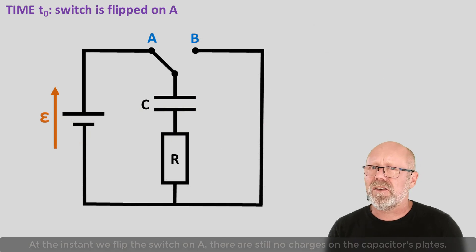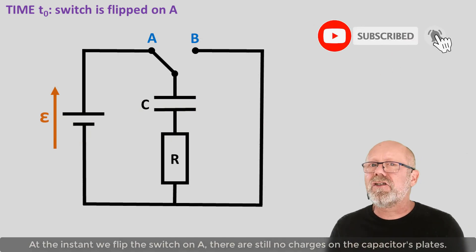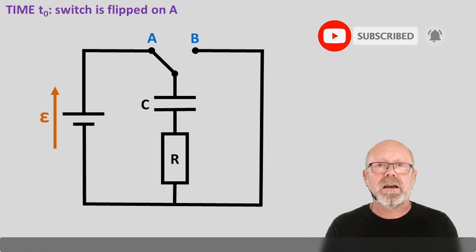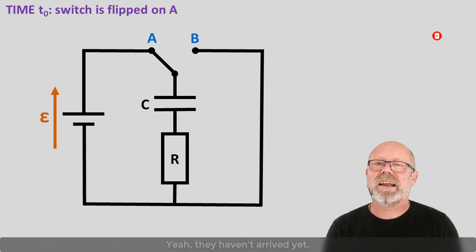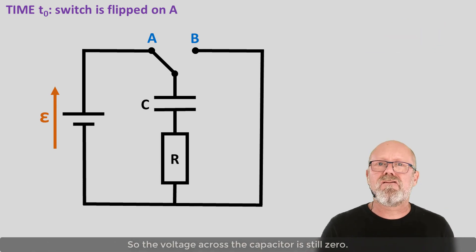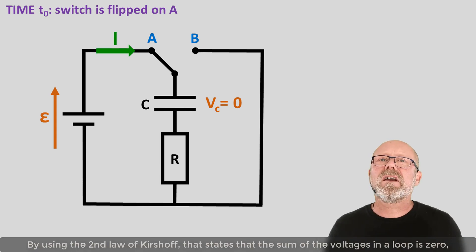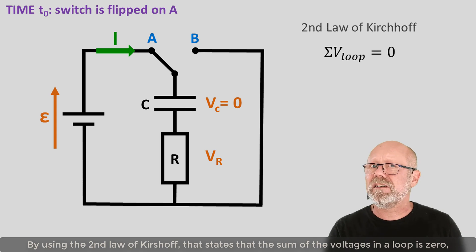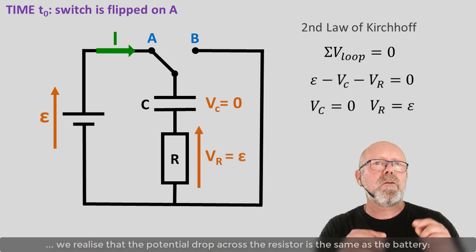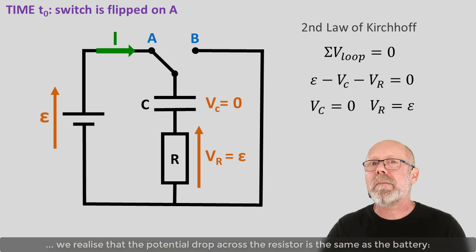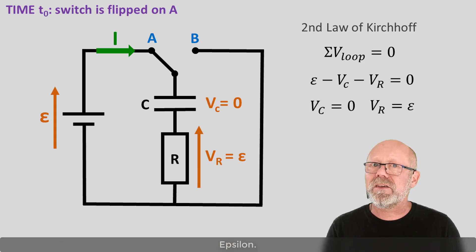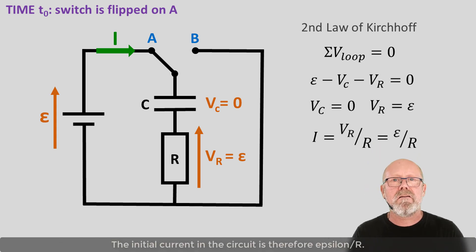At the instant we flip the switch on A, there are still no charges on the capacitor's plates. Yeah, they haven't arrived yet. So the voltage across the capacitor is still zero, and we have an initial current that establishes in the circuit. By using the second law of Kirchhoff, that states that the sum of voltages in a loop is zero, we realize that the potential drop across the resistor is the same as the battery, epsilon. So the initial current in the circuit is therefore epsilon over R.